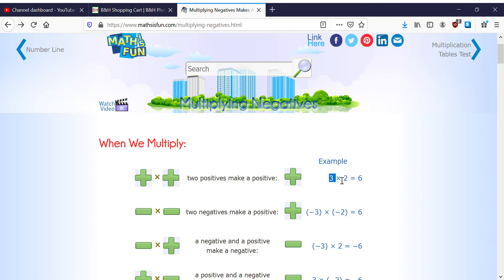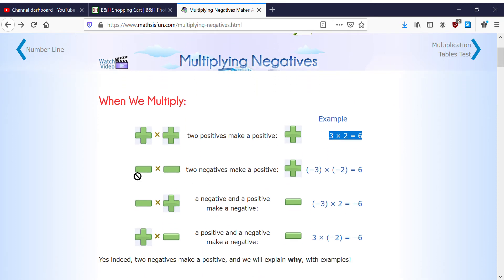3 times 2 equals positive 6. So positive 3 times positive 2 equals positive 6. Two negatives make a positive. Negative 3 times negative 2 equals 6, since when we multiply two negatives it makes a positive.